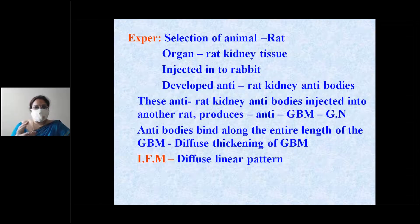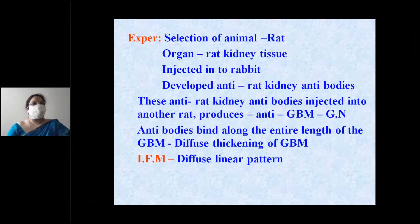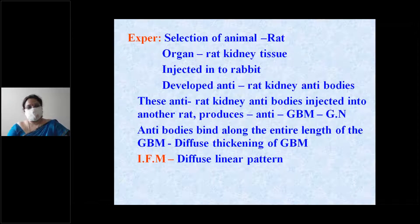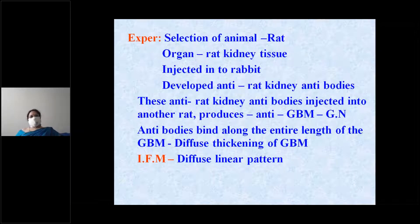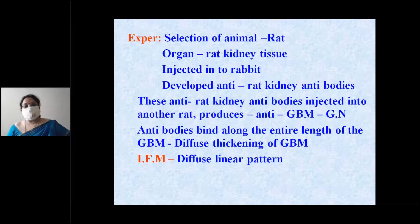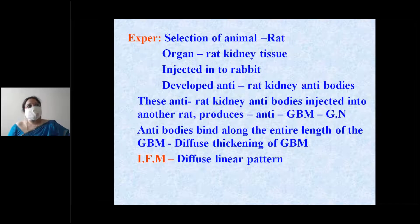The rat antibodies bound along the entire length of the glomerular basement membrane, causing diffuse thickening due to deposition of antibodies. On electron microscopy, the next important finding is the light microscopic and immunofluorescence appearance.